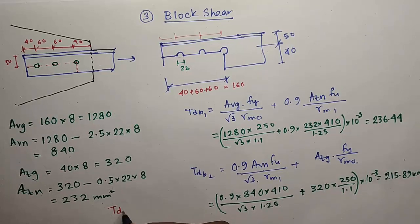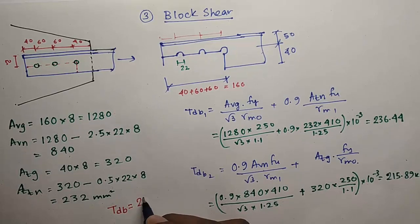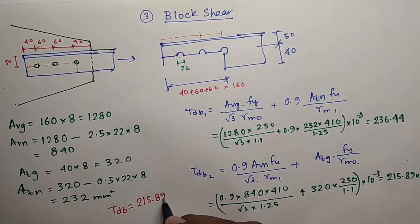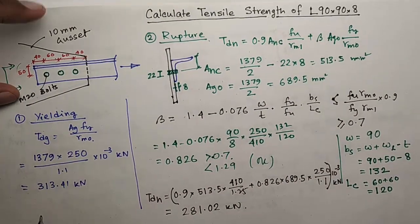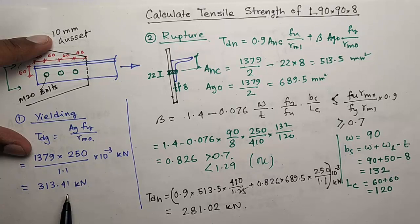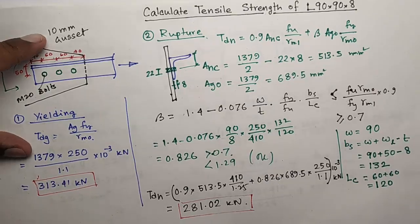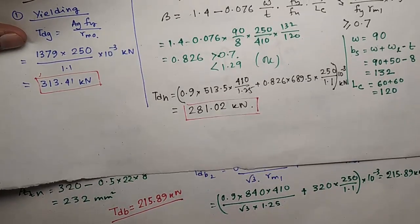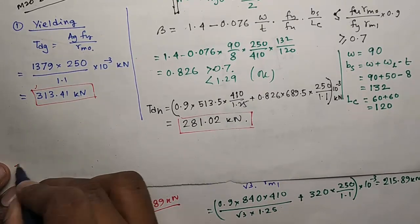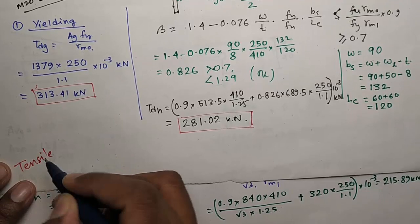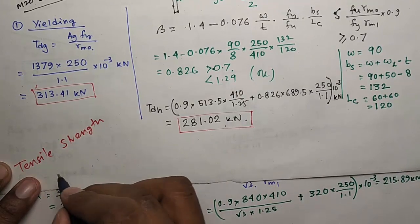So the design strength due to block shear TDB will be minimum of these two, which is 215.89 kilonewton. We have got yielding is 313.41, rupture is 281.02, and block shear is 215.89 kilonewton. So the tensile strength will be minimum of these three, which is 215.89 kilonewton.